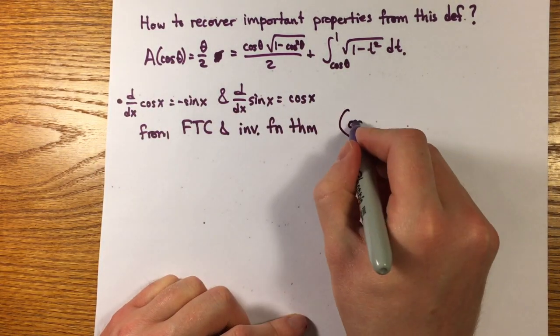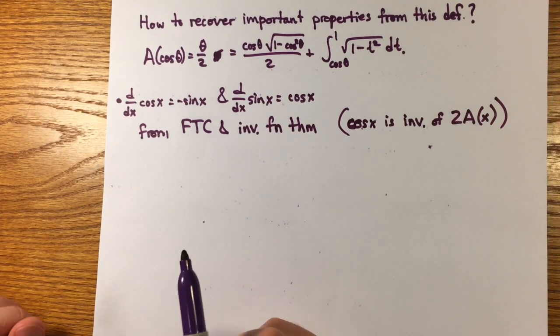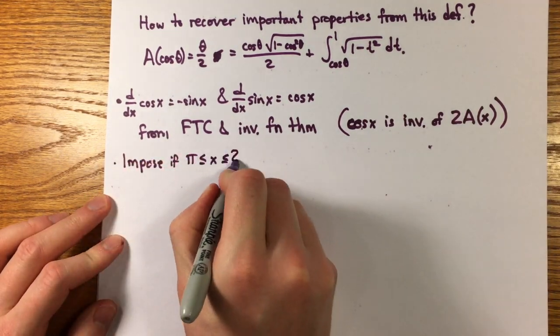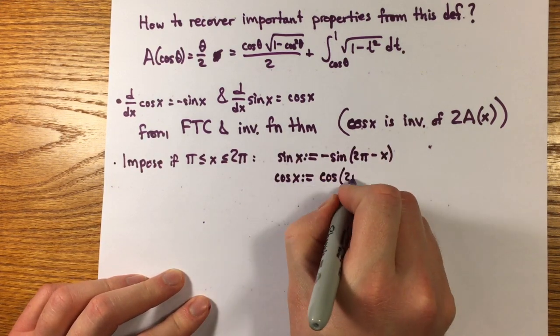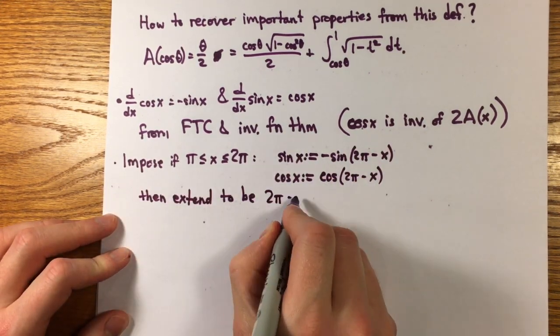Extensions of sine and cosine to r have to be imposed to make them periodic, though, first by imposing appropriate reflections over x equals pi, then imposing the 2pi periodicity, checking that all the derivatives line up.